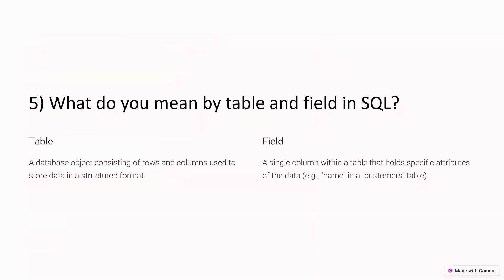Next question: what do you mean by table and field in SQL? A table is a database object that consists of rows and columns. A field is a single column within a table that holds a specific attribute.